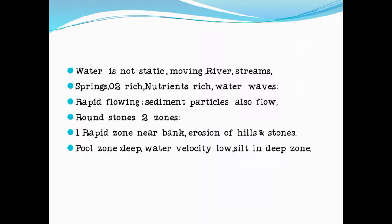In the rapid flowing zone, sediment particles also flow with the current. Stones are round. Near the bank of the rapid zone, erosion of hills and stones takes place. The second zone is the pool zone — deep water where velocity is low and silt is present in the deep zone.